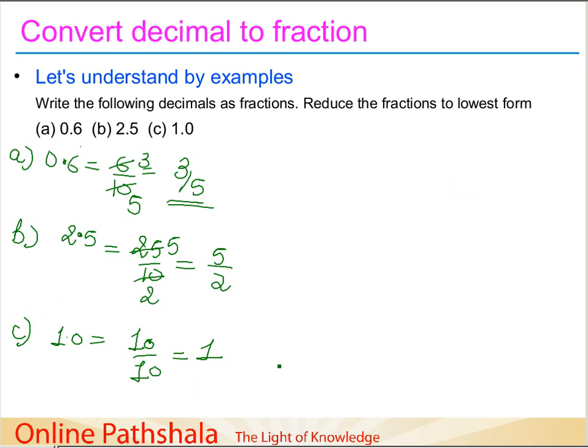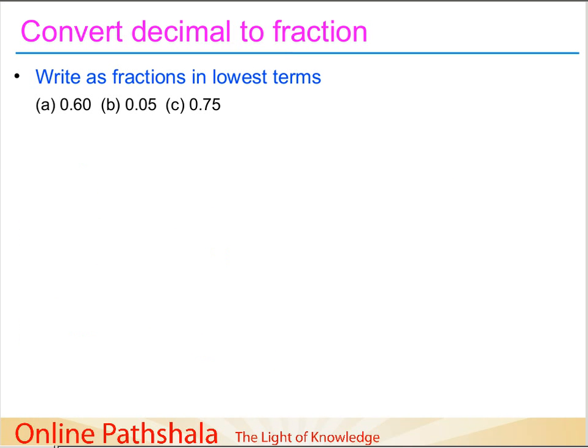The third one is 1.0, which can be represented as 10 by 10, which is just like 1. This is how we convert the decimal to a fraction. Let's try and take some more problems.